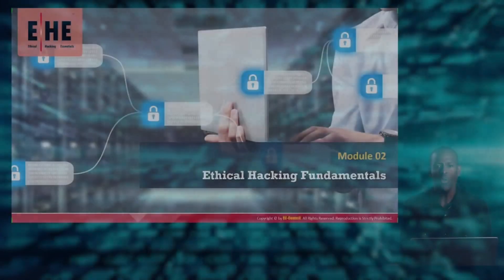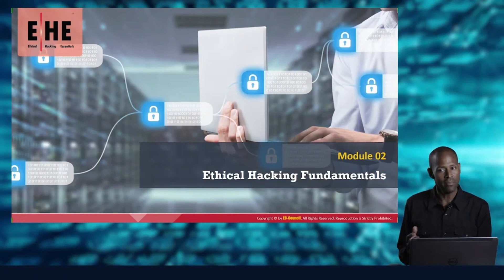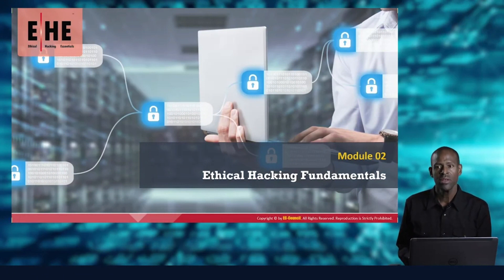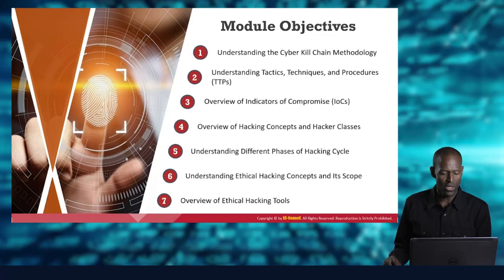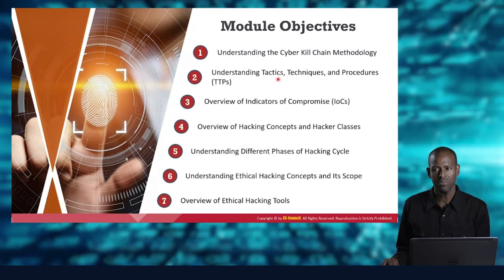Welcome to Ethical Hacking Essentials Module 2, where we're going to take a look at some ethical hacking fundamentals. In this module, we're going to take a look at seven different items. Number one, the kill chain. Number two, TTPs — tactics, techniques, and procedures. Number three, the concept of IOCs, which are indicators of compromise.